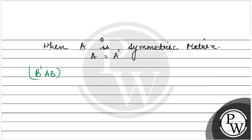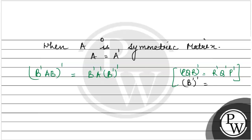For this, we first take the transpose of B'AB. We know that if we take the transpose of a product BQR, it equals R transpose, Q transpose, B transpose. So the transpose of B'AB becomes B transpose, A transpose, and then the transpose of B transpose. We also know that B transpose per transpose is always equal to B. So we can write B transpose of B transpose as B.